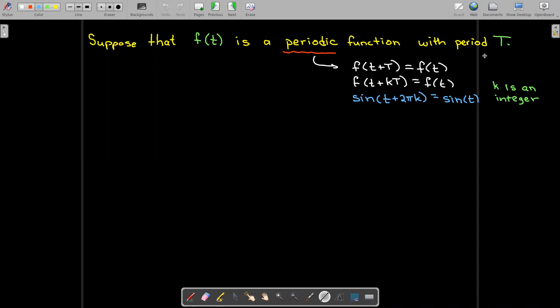If you get lost, just think of capital T as being 2π with sine or cosine. We know that sin(t + 2πk) is the same as sin(t), where k is an integer.